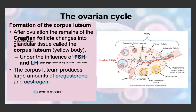After ovulation, the Graafian follicle remains in the ovary and becomes a corpus luteum — the egg has been released, so it's now an empty Graafian follicle. We also call the corpus luteum a 'yellow body,' and its formation is controlled by both FSH and LH. The corpus luteum then produces large amounts of progesterone and estrogen. These four hormones — FSH, LH, estrogen, and progesterone — are the important hormones for the menstrual cycle. The corpus luteum usually remains until around day 28, then it degenerates.